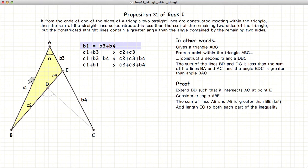we have that C1 plus B3 plus B4, or B1, is larger than C2 plus C3 plus B4. So we have C1 plus B1 is larger than C2 plus C3 plus B4.